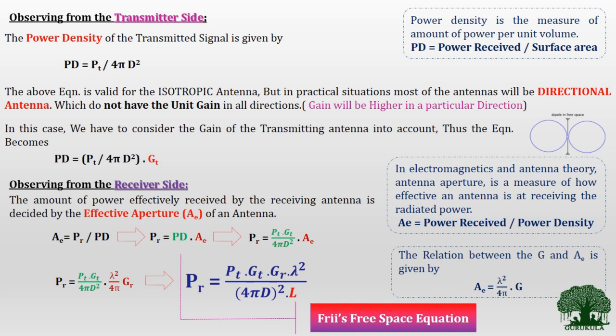In our previous video, we have derived or formulated the Friis free space equation. The Friis free space equation is given by the received power PR equals PT × GT × GR × lambda squared, over (4πD)² × L, where L represents the system loss. If you have not seen the formulation of this equation, I will give the link in the top right corner — you can check out the first part and then resume with this video.